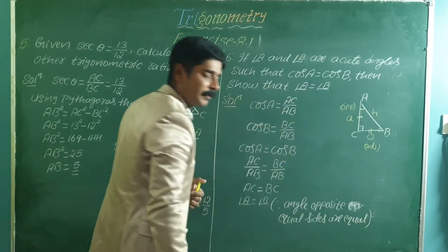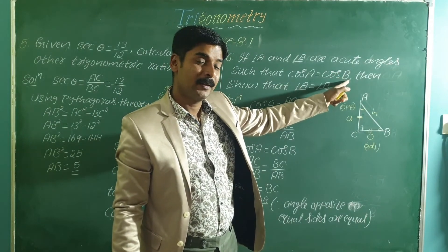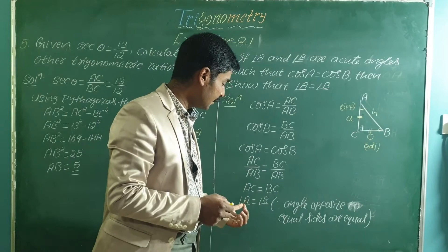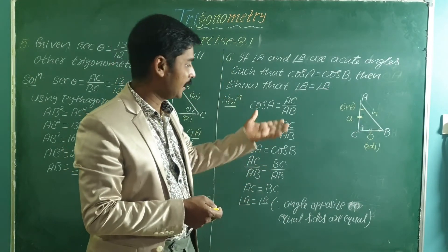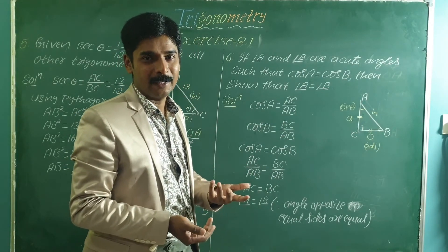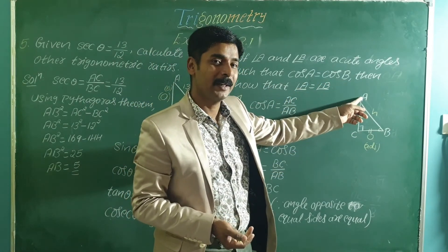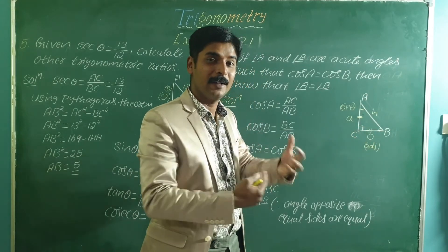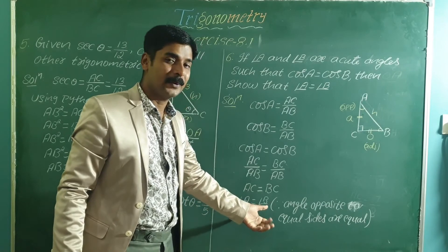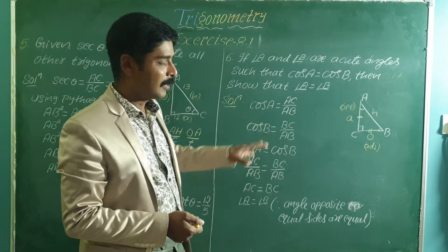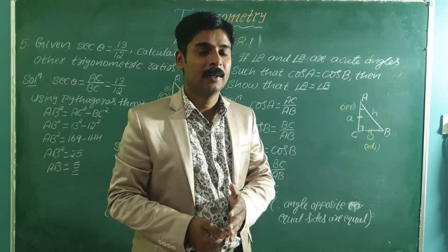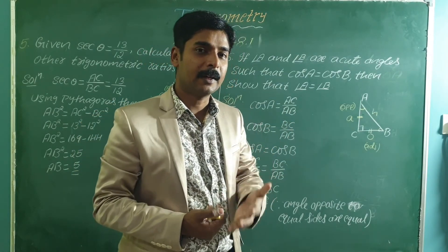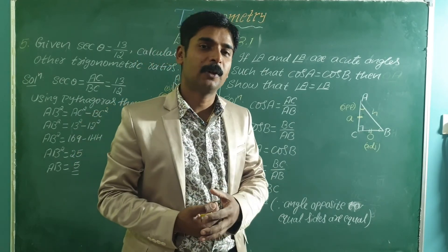If it were given that cos A equals cos Q, you would consider two separate right-angle triangles and use the concept of similar triangles to conclude that angle A equals angle Q. But this problem is simpler. After solving a set of problems, I will write extra problems on the board. If you want, you can solve those problems.